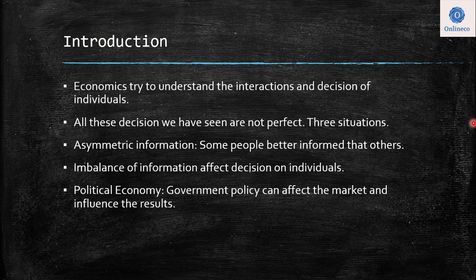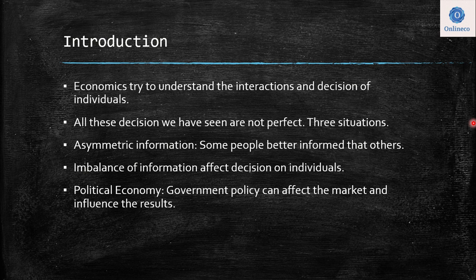The second part is political economy. We already know that government policy can affect the market and influence results. The government can intervene in market outcomes with different instruments — we have already seen the power of subsidies, the power of taxes, and the power of quotas on imports or any other mechanisms that the government uses.